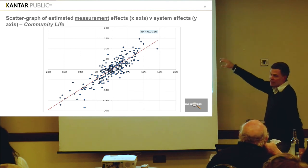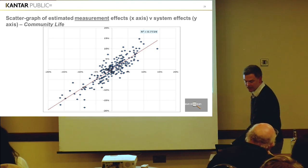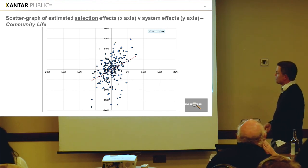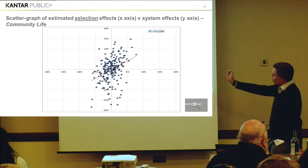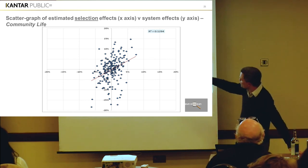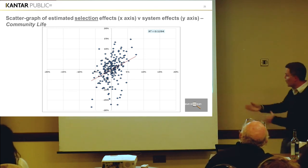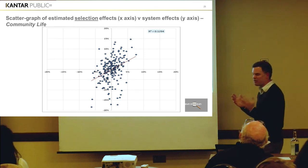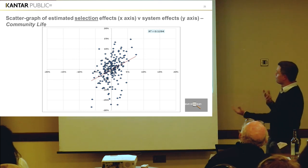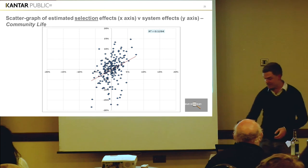They're clustered around the line sufficiently that one might think measurement effects are the primary cause. For completeness, here are the selection effects calculated from the same study. Although there is a correlation, the R-squared is about 0.13, so quite small. And the largest selection effect is about five or six percentage points, whereas the largest measurement effect is about 15 percentage points. So I drew the conclusion that generally speaking this was all due to measurement and not due to selection.